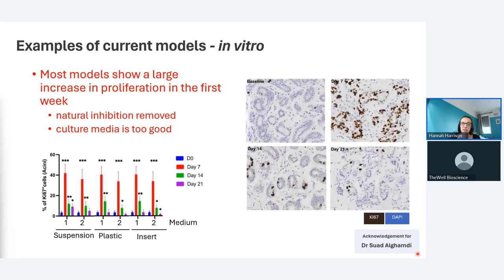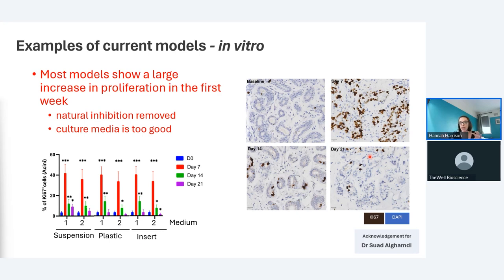This data from Suad, one of our former PhD students now a postdoc, shows results from several different culture systems — chunks in a rotatory suspension system, chunks on plastic, and chunks in a Boyden chamber insert. Across all of the repeats and in all of the different conditions, by day seven there was a massive spike in proliferation — the red bar. You can see the Ki67-positive cells, shown in brown in the panels on the right, are the proliferating cells, dramatically increased by day seven.